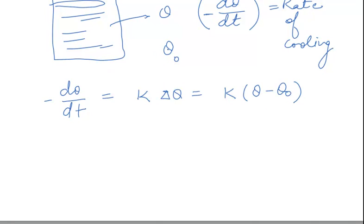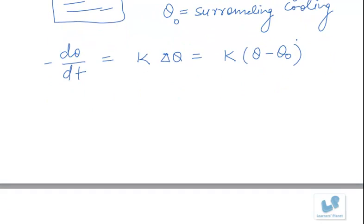Okay, where theta naught is that of the temperature of the surrounding. Now this is a very simple expression. Now this can be written as d theta by theta minus theta naught equal to minus K times dt.